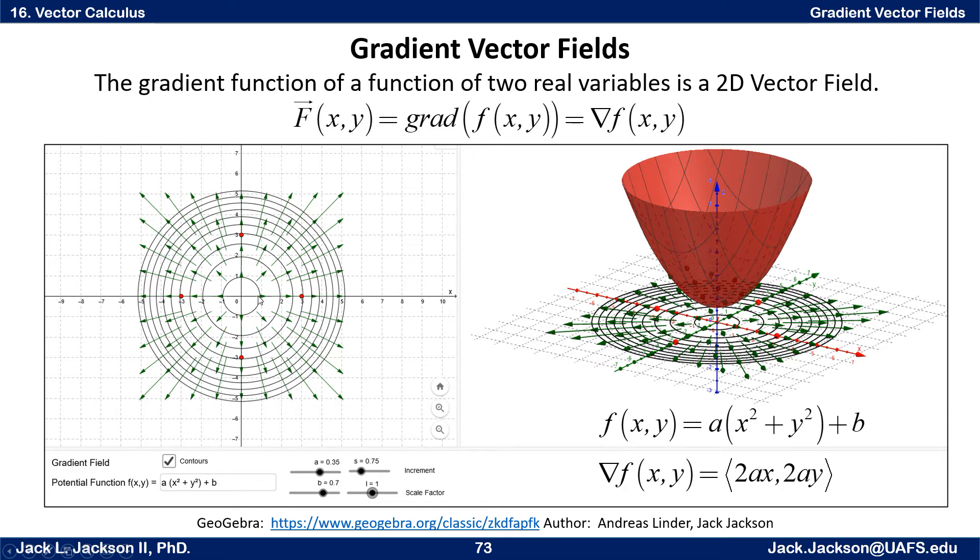Here I have contours for z equals 1, 2, 3, 4, 5, 6, 7, 8, 9, and 10. Notice the contours get closer together as we go further out, meaning that this thing is growing faster and faster in height as we go out. A little slower growing right here near the origin.